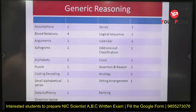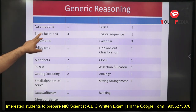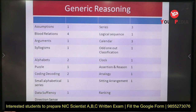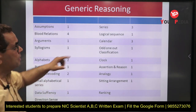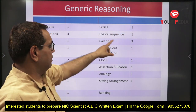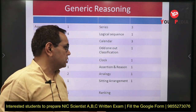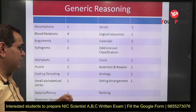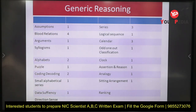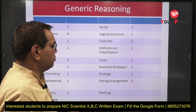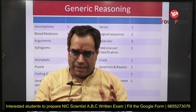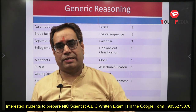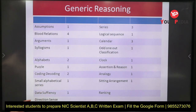Now let us see the generic reasoning section. From the 2022 paper: assumptions — one question; blood relations — four questions; argument — one question; syllogism — one question; alphabets — two questions; puzzle — one question; coding-decoding — two questions; alphabetical series — one question; data sufficiency — one question; series — three questions; logical sequence — one question; calendar — three questions; odd one out — one question; clock — one question; assertion and reason — one question; analogies — one question; sitting arrangement — one question. Direction sense and Venn diagrams are also very important topics to prepare.